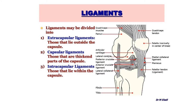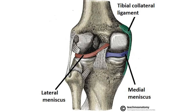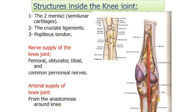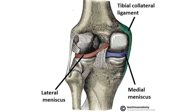Ligaments can be divided into: extracapsular ligaments — those that lie outside the capsule; capsular ligaments — those which are a thickening of the capsule itself; and intracapsular ligaments — those present within the capsule.